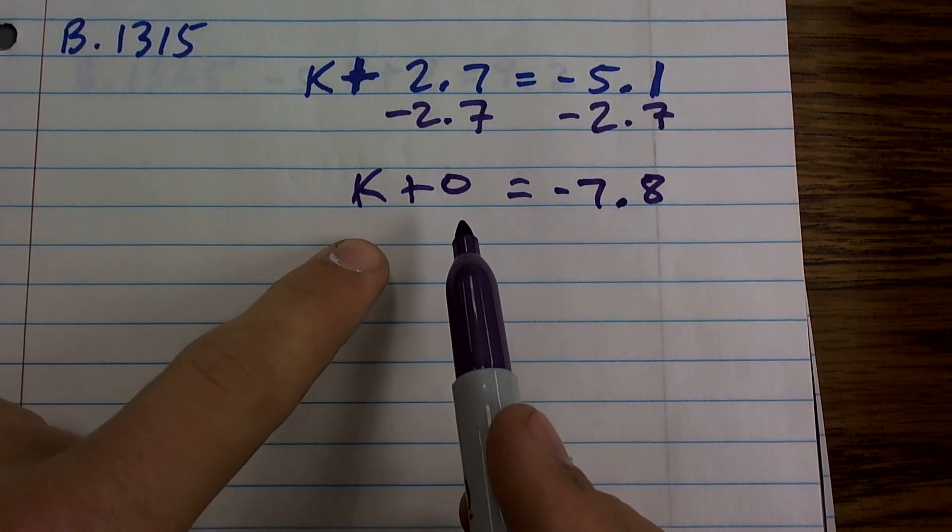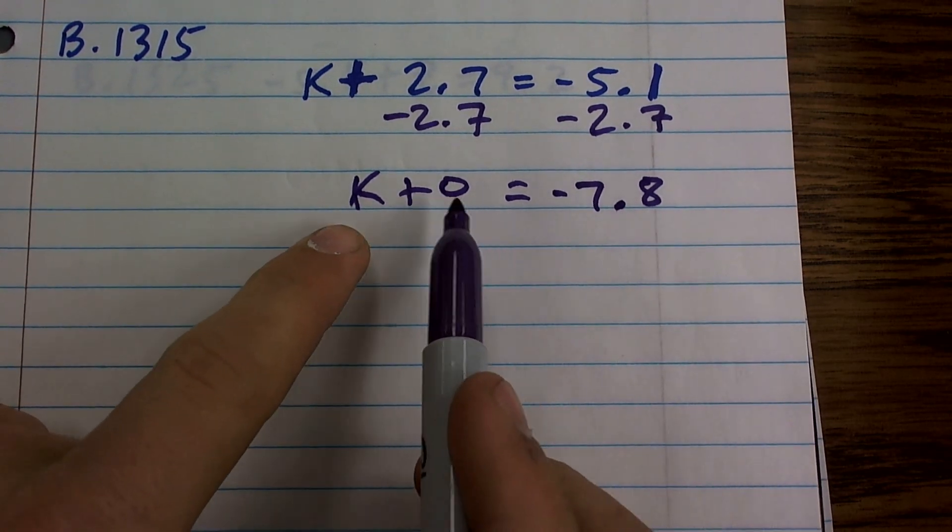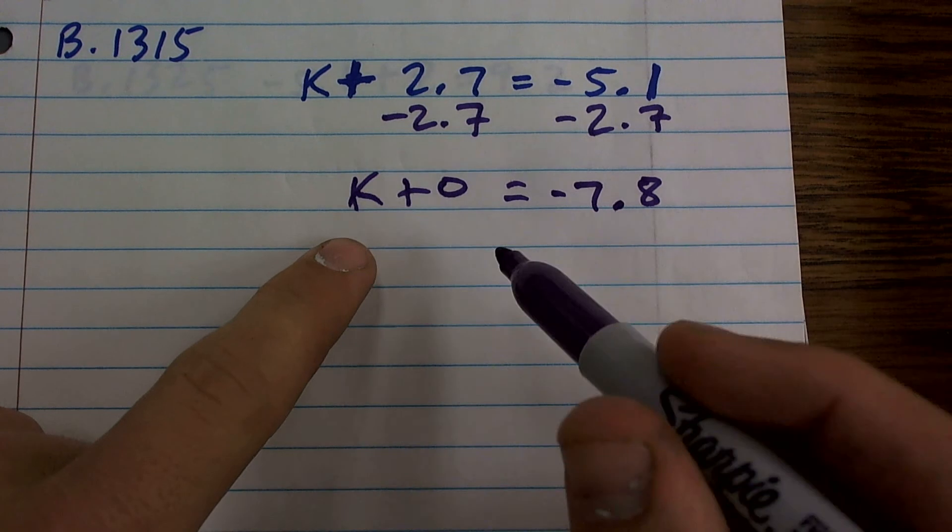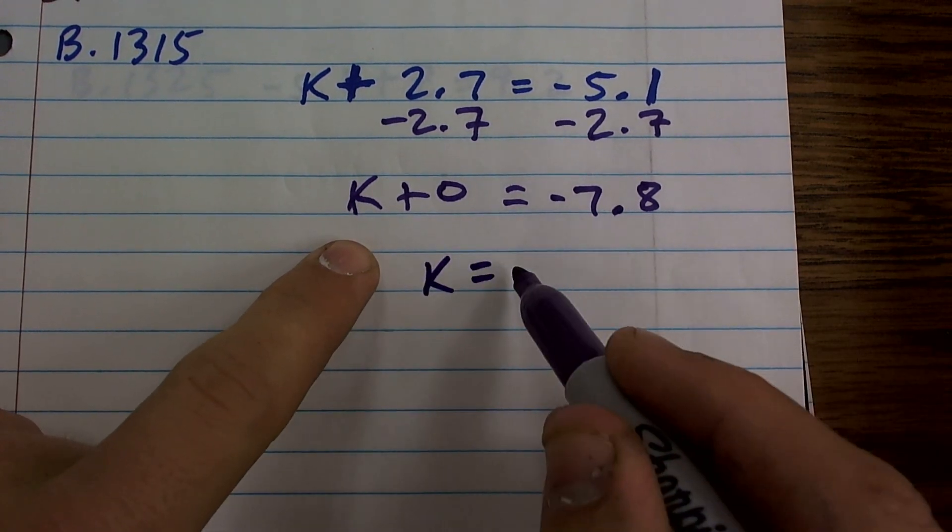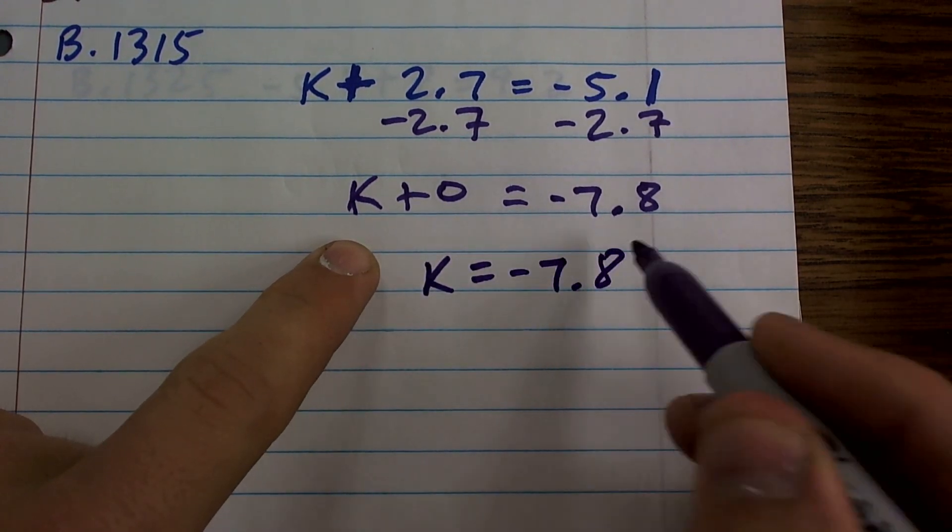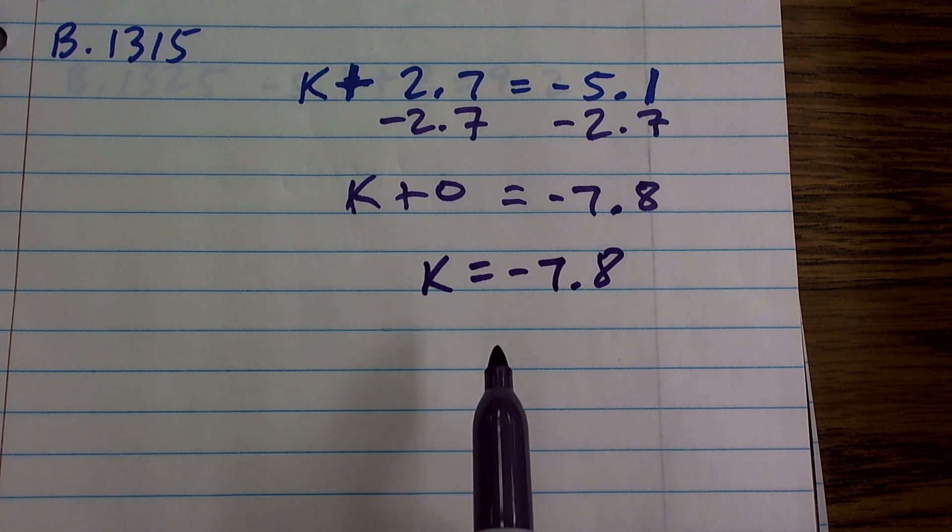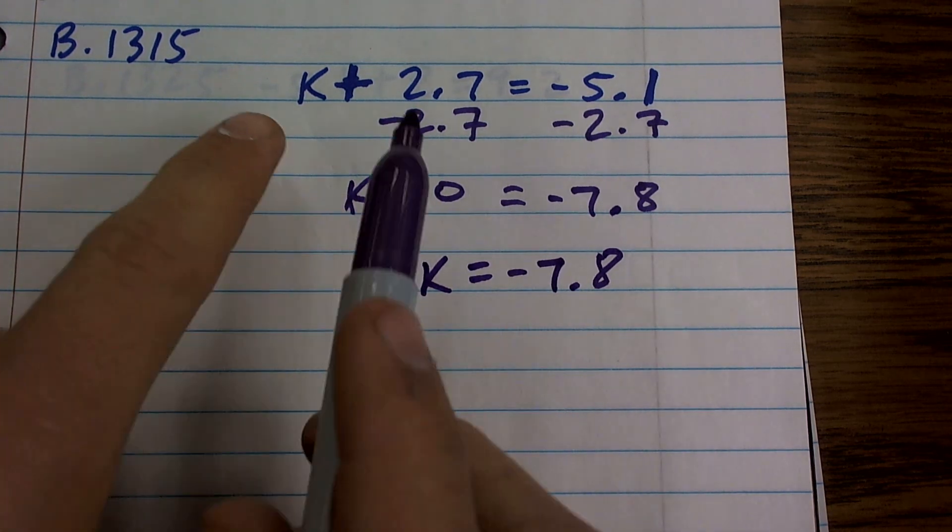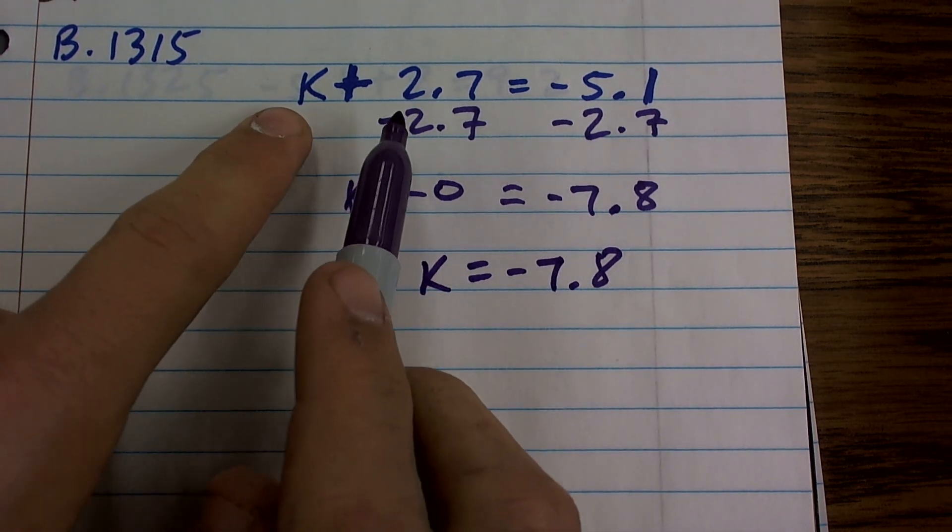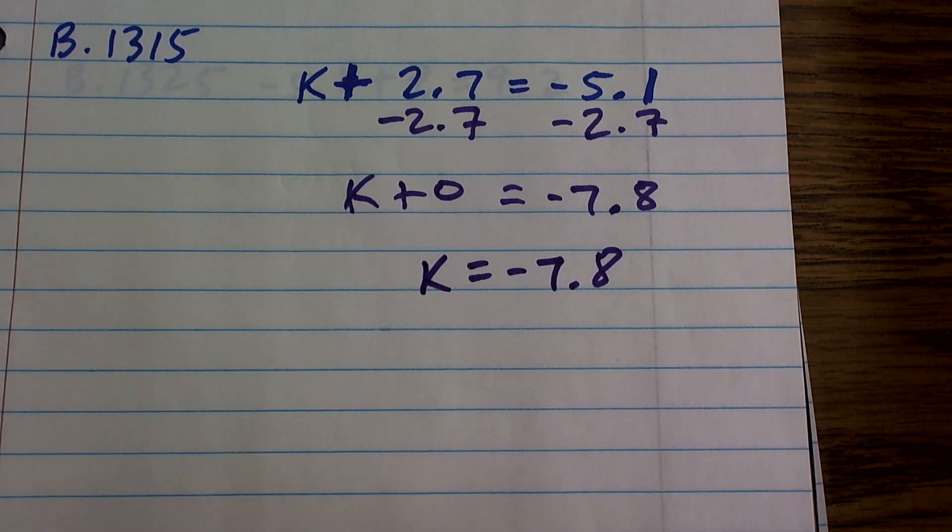Now, remember, by the addition property of 0, k plus 0 is going to give me k, which equals now negative 7.8. So therefore, the solution or the value of k that makes this equation true is negative 7.8.